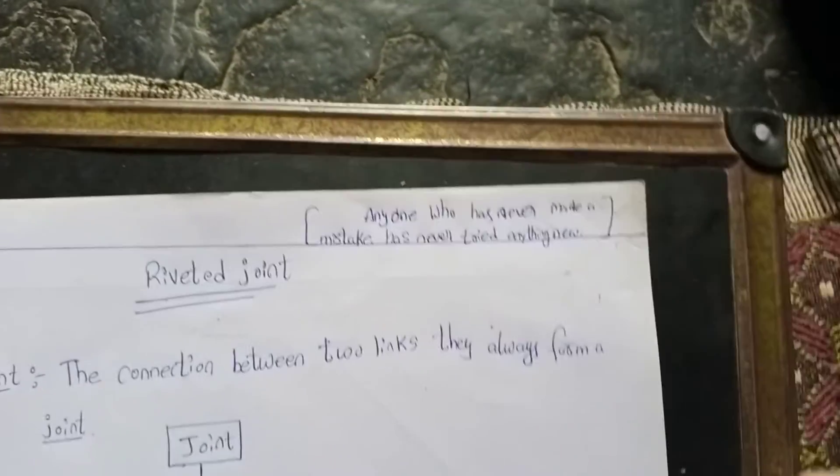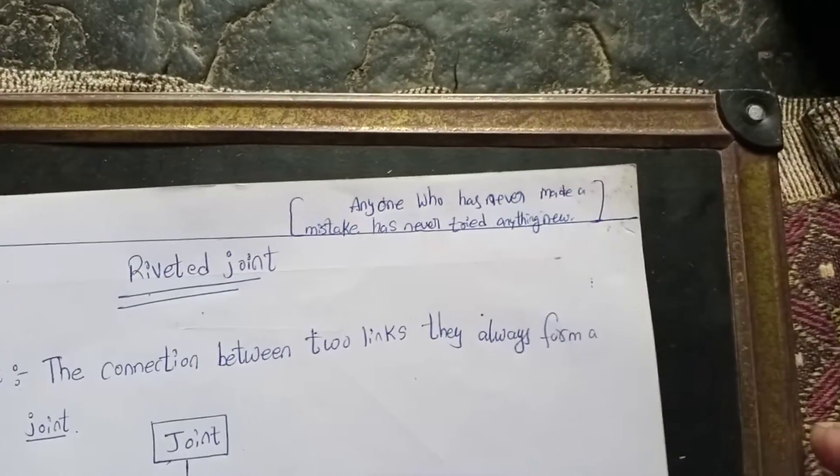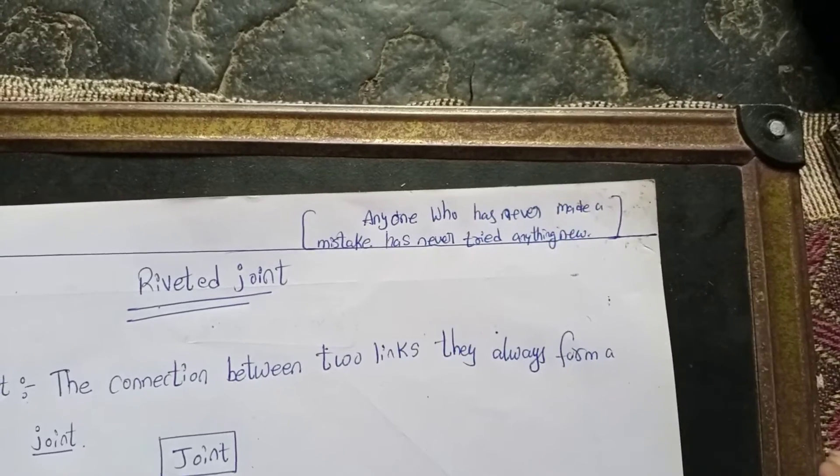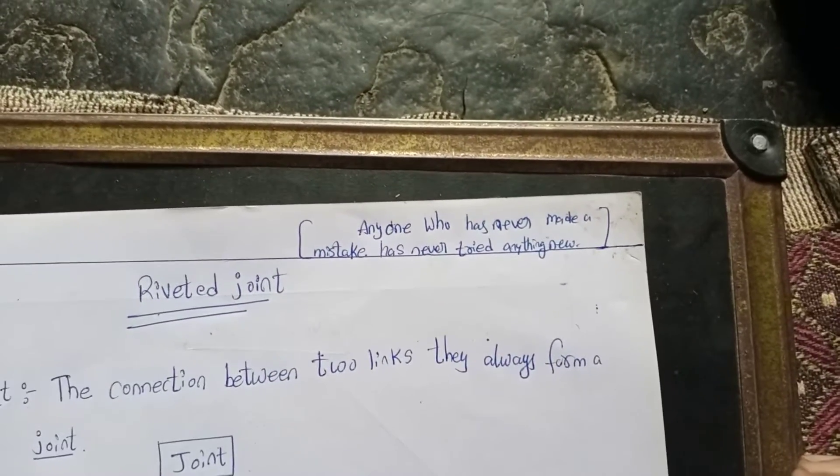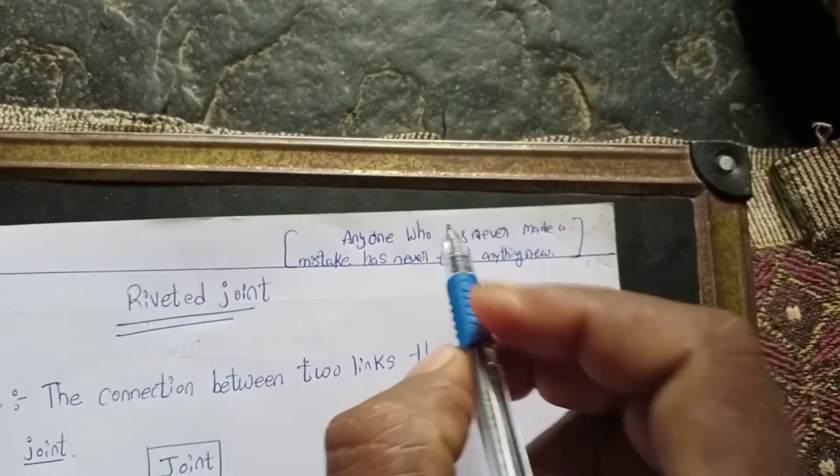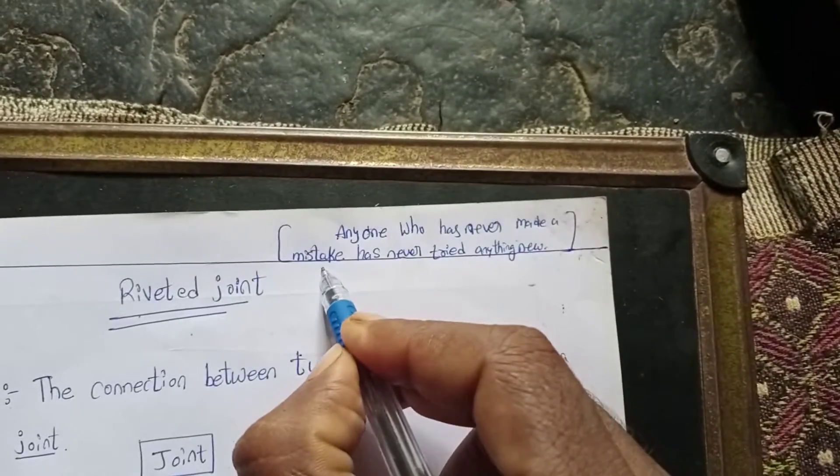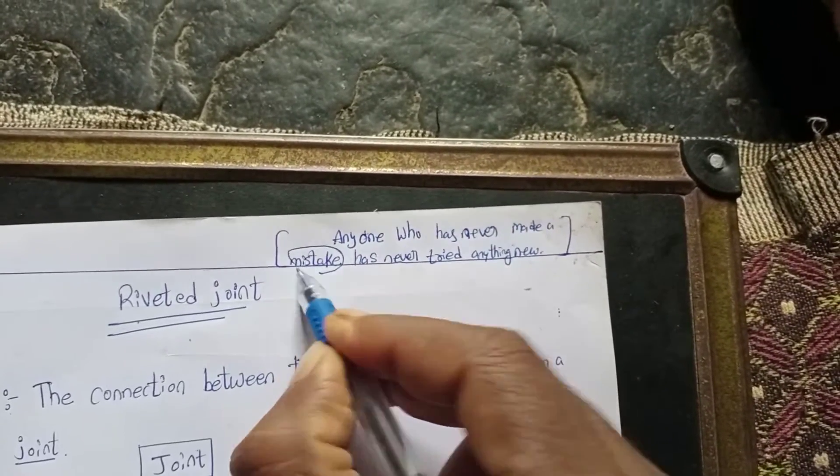Hi friends, how are you? Today our quotation of the day is: anyone who has never made a mistake has never tried anything. Meaning, in life, if we make mistakes, we can still do anything.